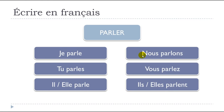Then come the plural forms. 'Nous' means 'we' — 'nous parlons.' Then 'vous,' meaning 'you' in the plural form, though we'll see later it can also be used as a polite singular — 'vous parlez.' Finally, 'ils' and 'elles': in French we distinguish between the masculine plural 'ils' and the feminine plural 'elles' — both give us 'parlent.'